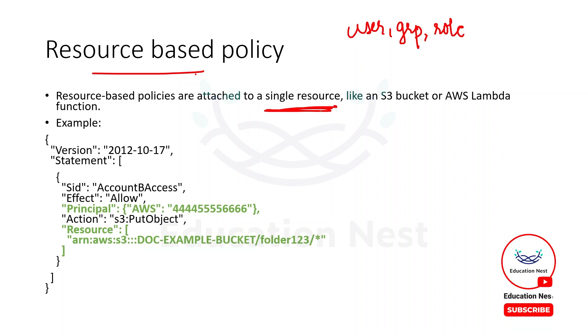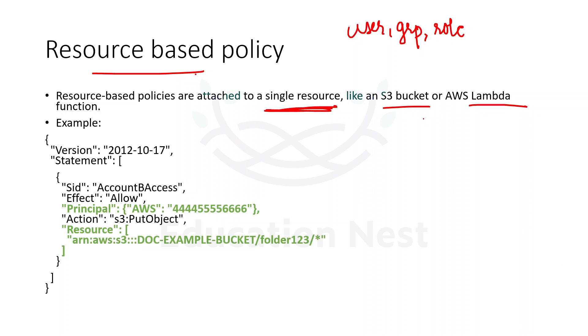What are resources? Resources are nothing but the services of AWS, like S3 bucket, Lambda, DynamoDB, and SNS. These are the resources to which we can attach the policies.